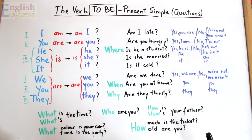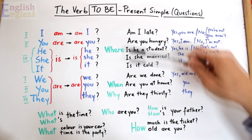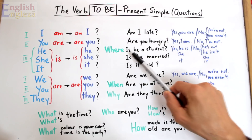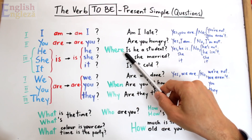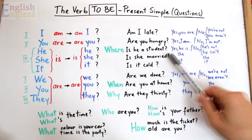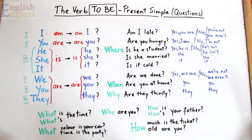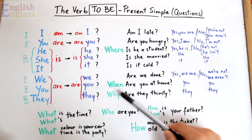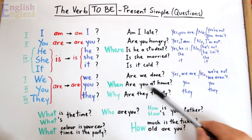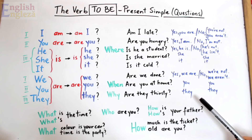Aceste întrebări se plasează înaintea verbului, devenind primul cuvânt al propoziției. Să transformăm câteva dintre întrebările de mai sus folosind aceste cuvinte. De exemplu, Is he a student? — Este el student? Putem extinde cu where: Where is he a student? — Unde este el student? Atunci nu voi mai putea răspunde scurt cu yes sau no. Sau Are you at home? poate fi completată cu when: When are you at home? — Când sunteți voi acasă? Sau Are they thirsty? cu why: Why are they thirsty? — De ce le e sete?